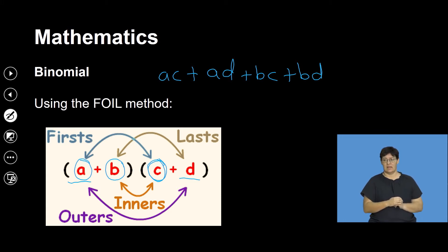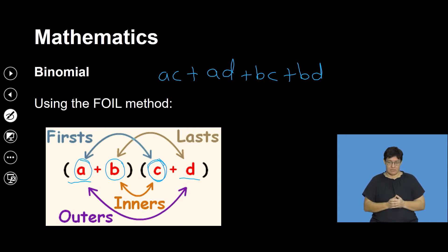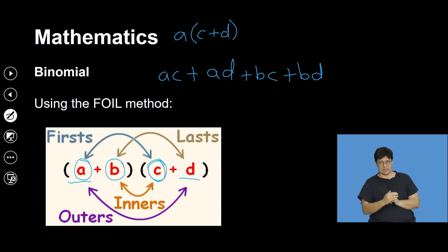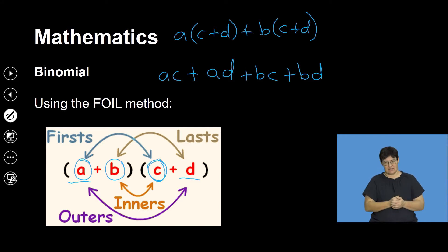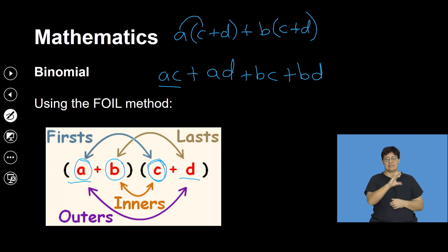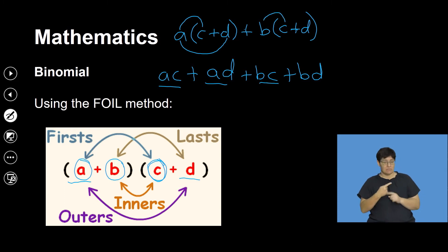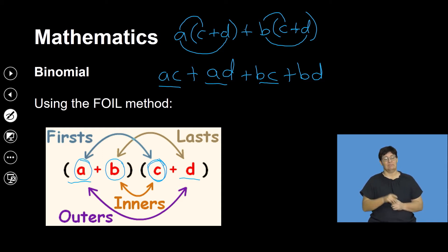This is the same as using the distributive property: A(C plus D) plus B(C plus D). A multiplied by C gives AC, A multiplied by D gives AD, B multiplied by C gives BC, B multiplied by D gives BD — exactly the same answer. This is the easier method for multiplying two binomials.